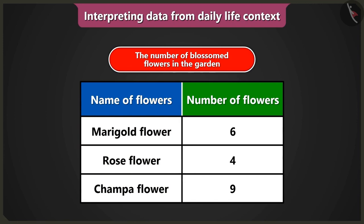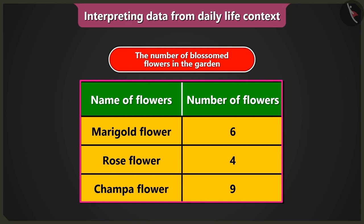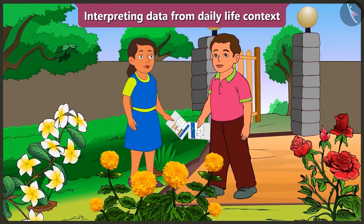Now read the second column. What is the number of flowers? The number of marigold flowers is six, the number of rose flowers is four, and the number of chumpa flowers is nine. The data collected about the number of blossomed flowers in the garden has been shown in this table. This is very interesting — now I will not have to count the flowers one by one.